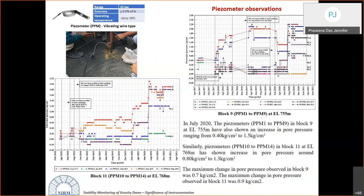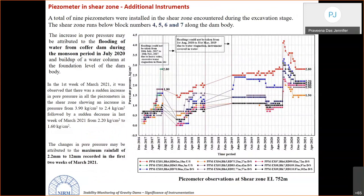Piezometer observations record pore pressure within the rock mass. Piezometers are placed at the bottommost levels and at critical contact zones. Observed ranges are small — 0.4 to 1.5 kg/cm² — with a maximum pore pressure change of 0.7 to 0.9 kg/cm². In the shear zone below blocks 4–7, any increase in pore pressure is immediately detected by these instruments.